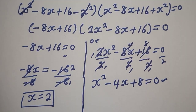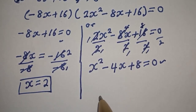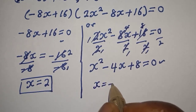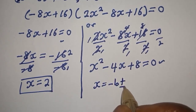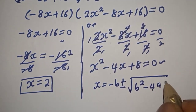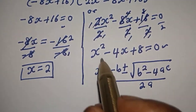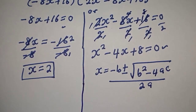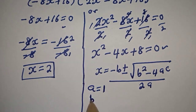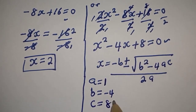This can be solved using the quadratic general formula. The quadratic formula gives s equal to minus b plus or minus square root of b squared minus 4ac, over 2a. From this equation, a is equal to 1, b is equal to minus 4, and c is equal to 8.